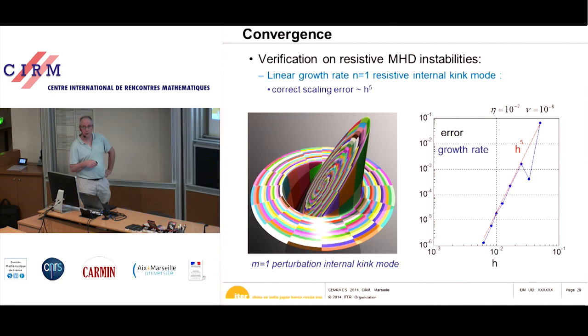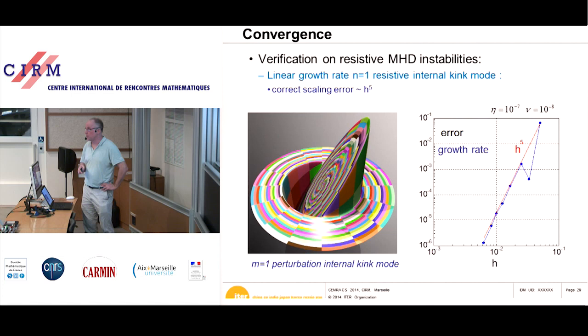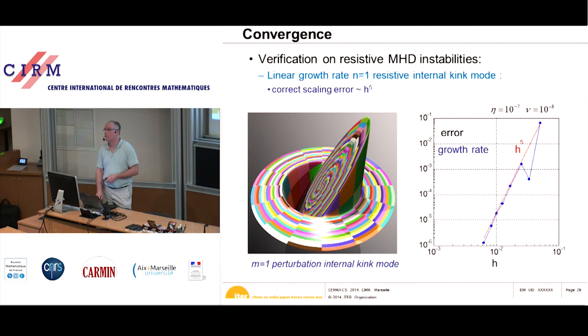We have studied convergence — for example, the growth rate of an MHD instability, specifically the internal kink mode responsible for sawteeth in tokamaks. We can calculate the error in the growth rate as a function of grid size, and see that it scales with the fifth power of the grid size, which is the expected high-order convergence.